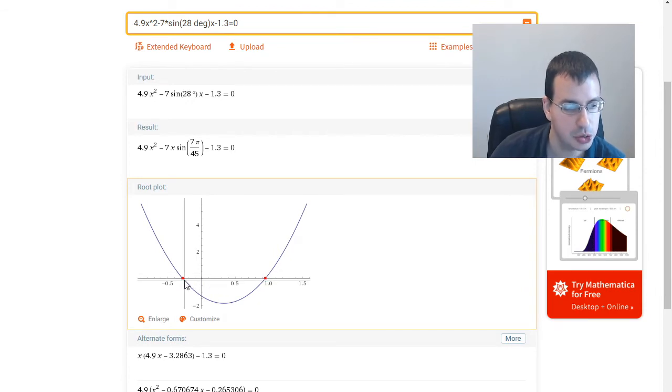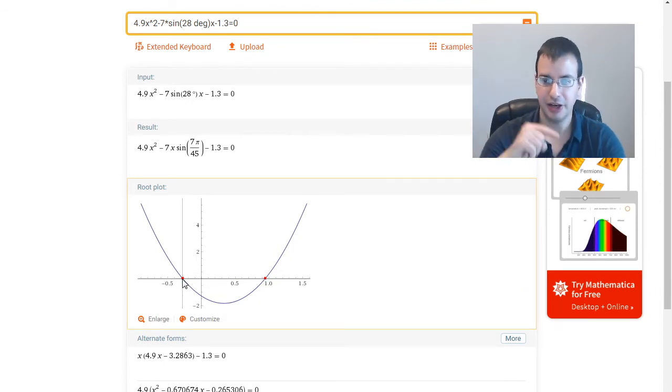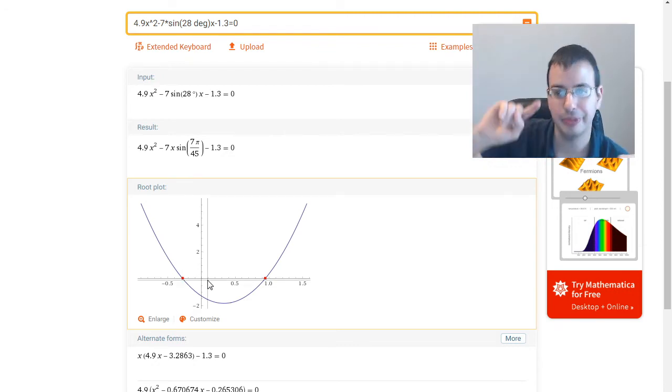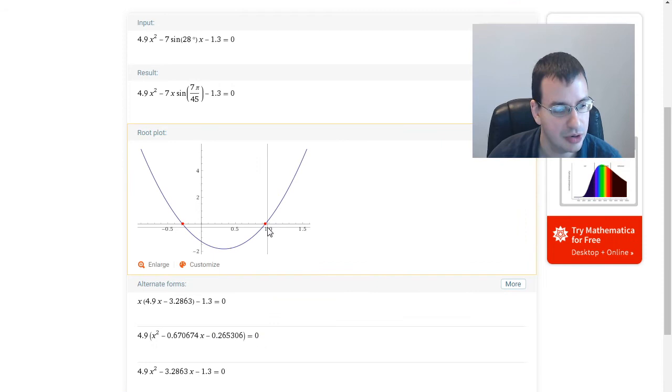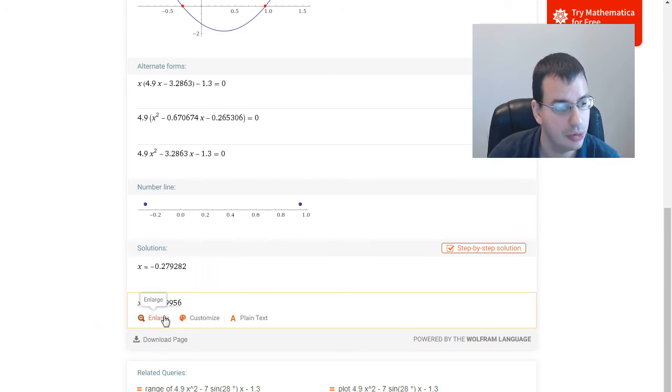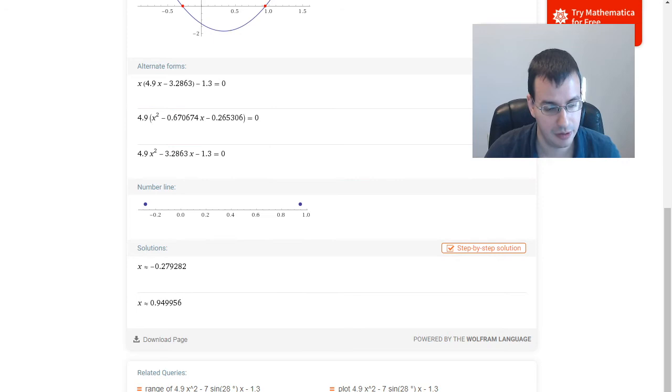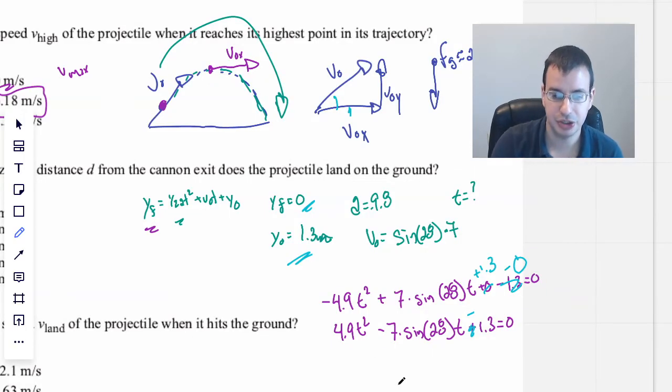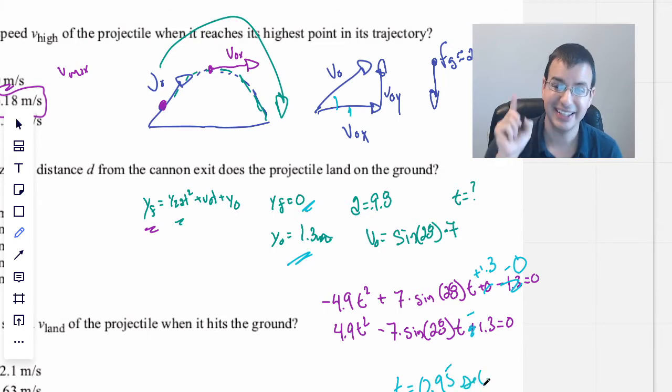So one zero should be negative, correct. One zero is positive. So this one is saying that if it was projectile motion, it would have launched at some point in the past. And this right here, we have x equals negative 0.279, not the one we want because it's negative time. We have 0.95 seconds.